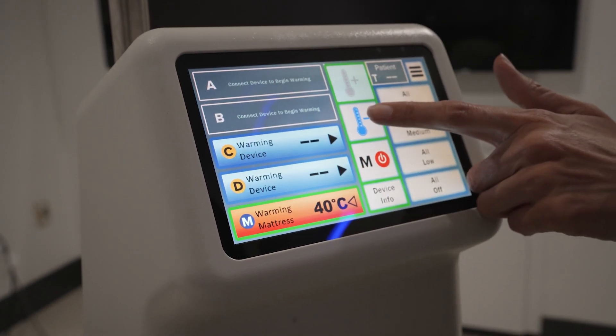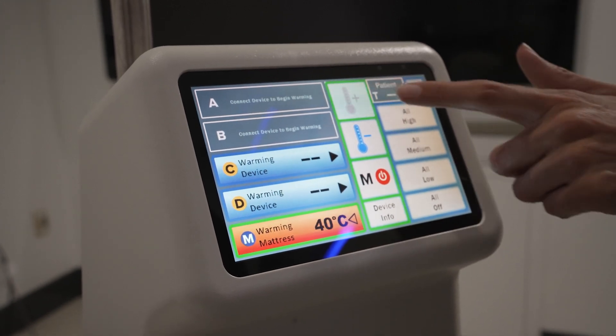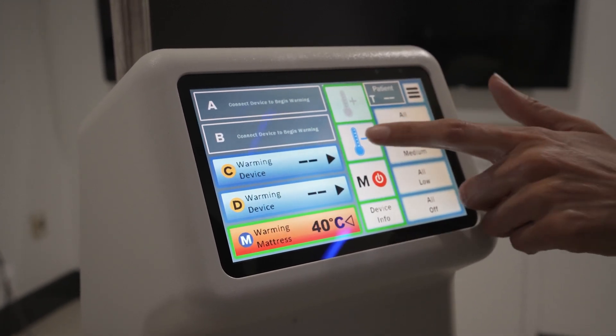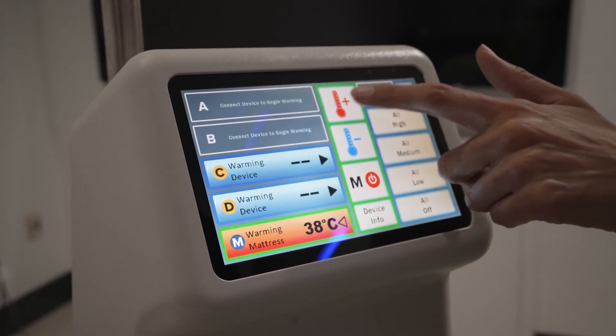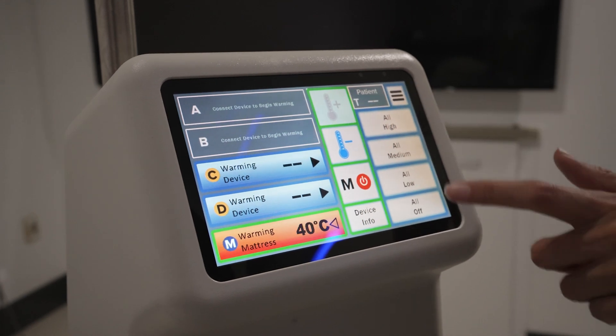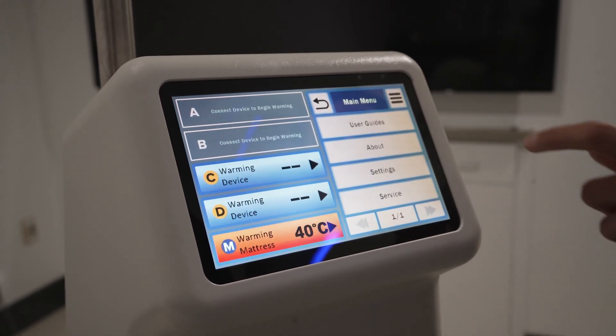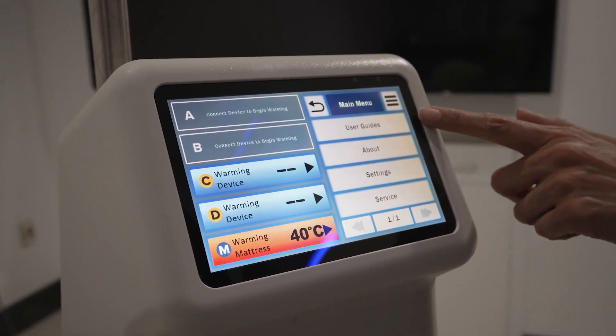Other functions of the 7-inch touchscreen controller include the ability to adjust settings, review user guides, and service checks. The controller can clamp directly onto an IV pole with the included hardware. If desired, there is also a wall mount or a rolling stand available.